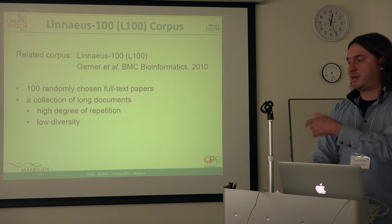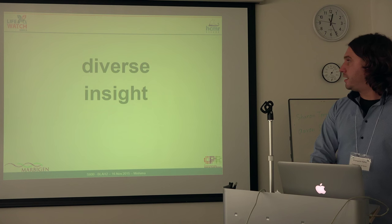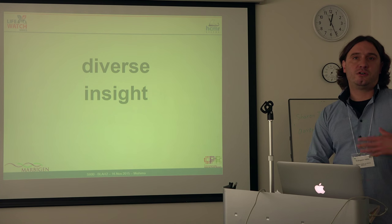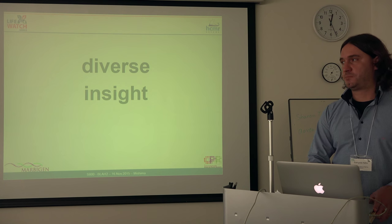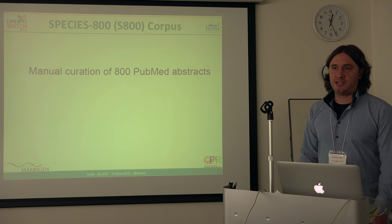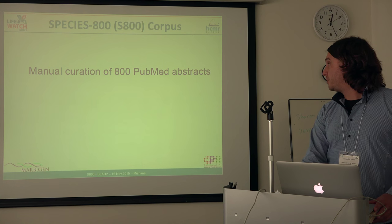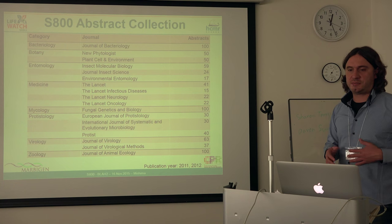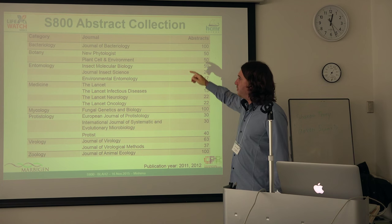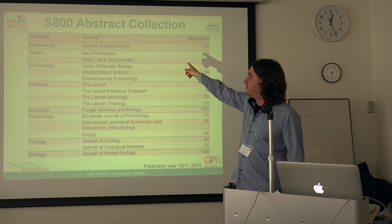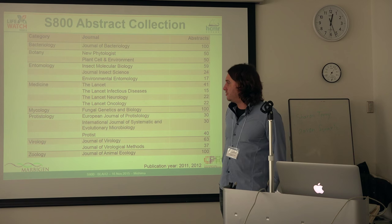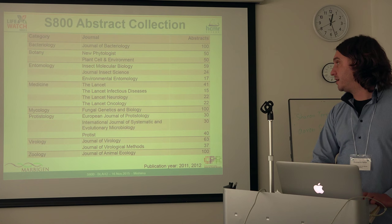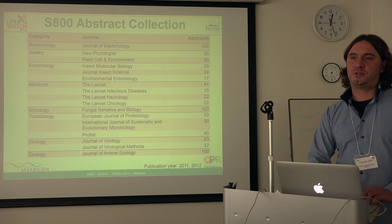So we wanted to move away from this high degree of repetition that lowers diversity. In order to benchmark the system we were developing — the species tagger — we wanted an approach that would increase diversity and provide options for insight, for example to see how species names appear in different scientific fields. This gave rise to the S800, the Species 800 Corpus. We went to Thomson Scientific and collected journals representative of different fields, like general bacteriology for bacteriology, or fungal genetics and biology for mycology. Medicine is included too, but as a control, because we expect not to find many names there — useful for testing false positives.